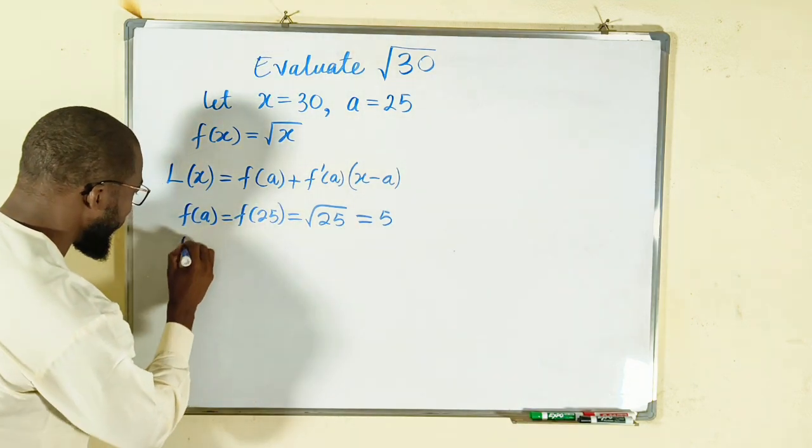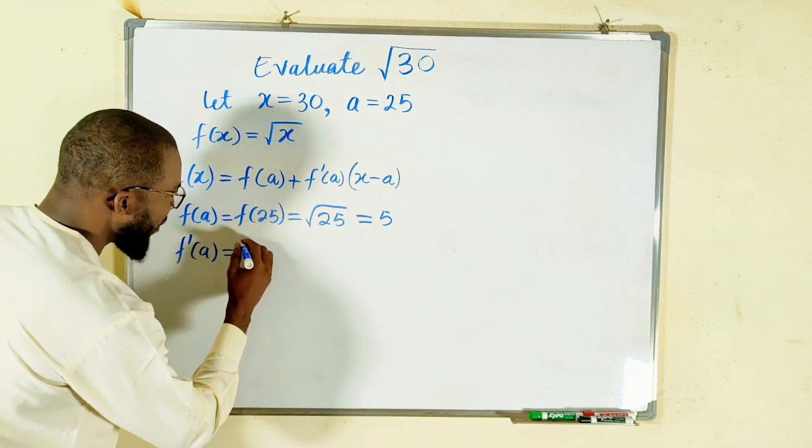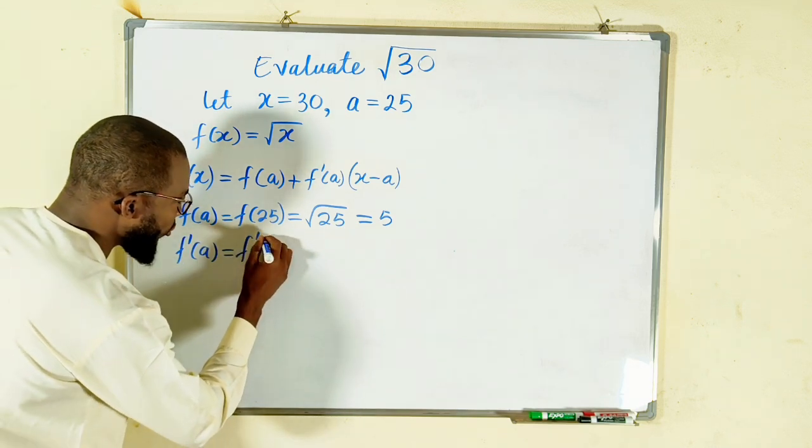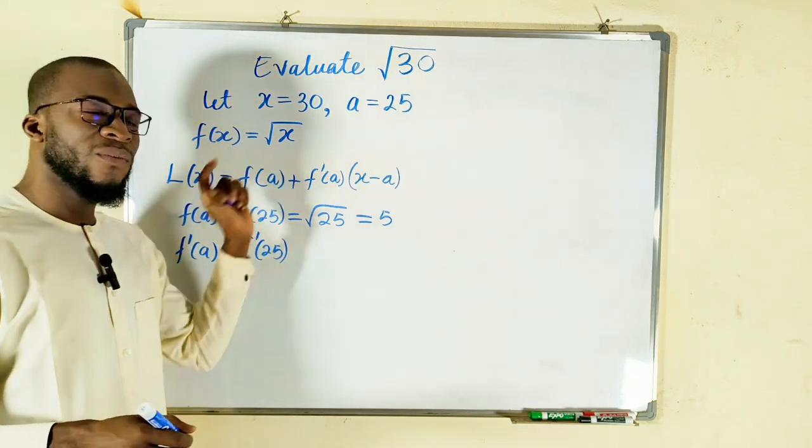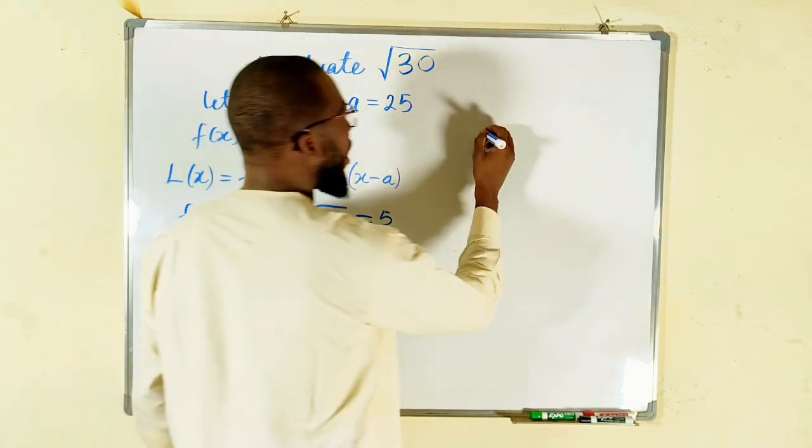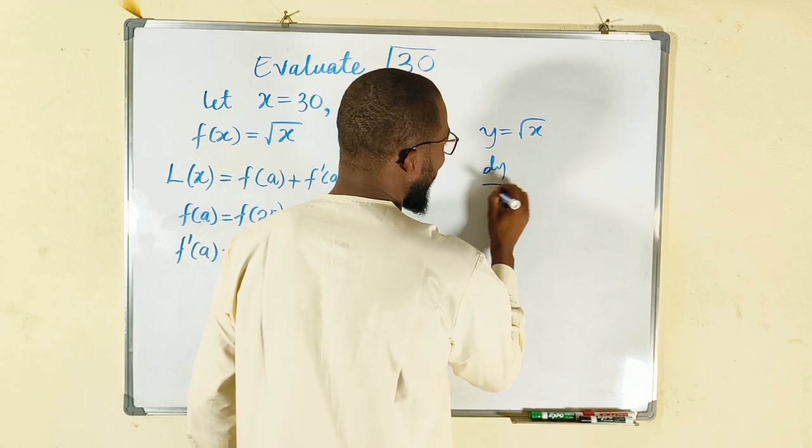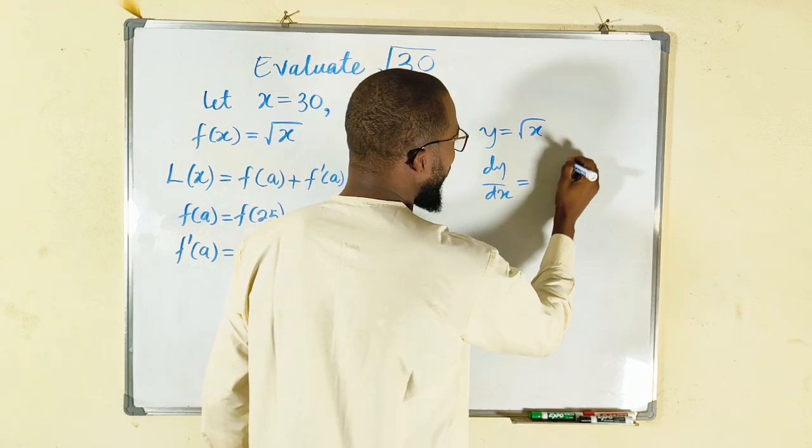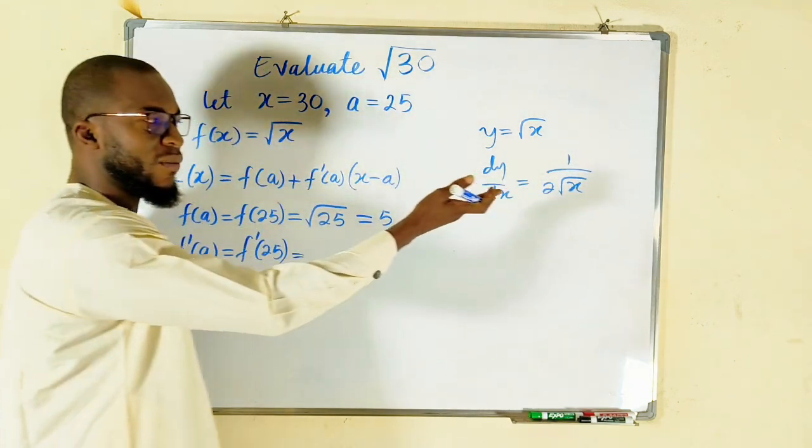Then f'(a) is the same thing as f'(25). But what is f'? It means the derivative of the square root of x. You know, naturally, if you have y equal to the square root of x, dy/dx is always equal to 1 divided by 2 multiplied by the square root of x. This is the derivative rule.